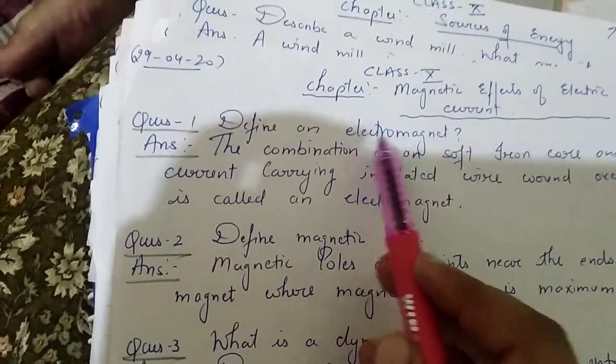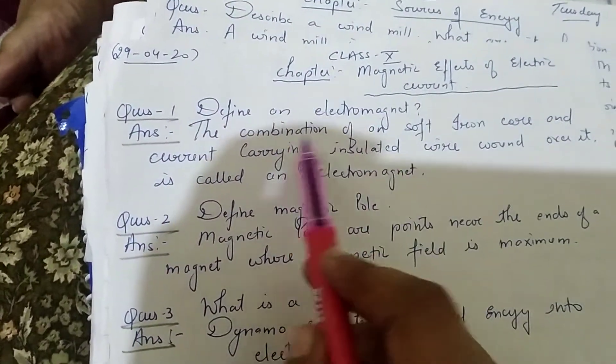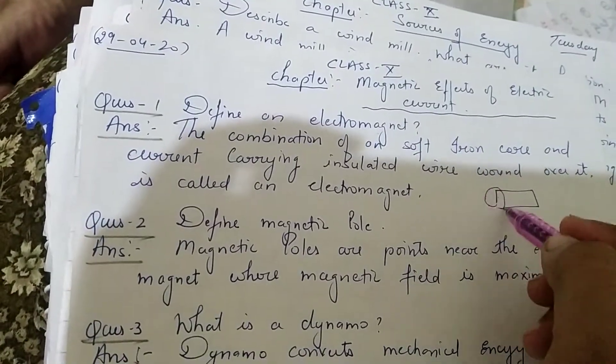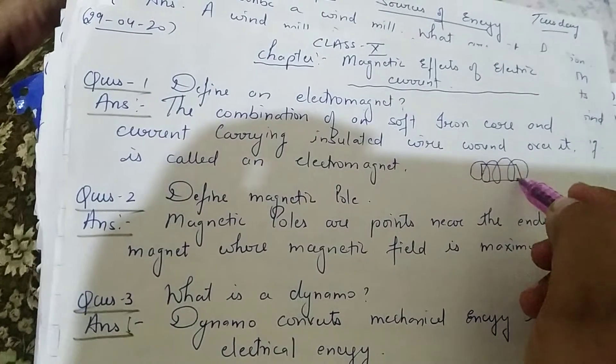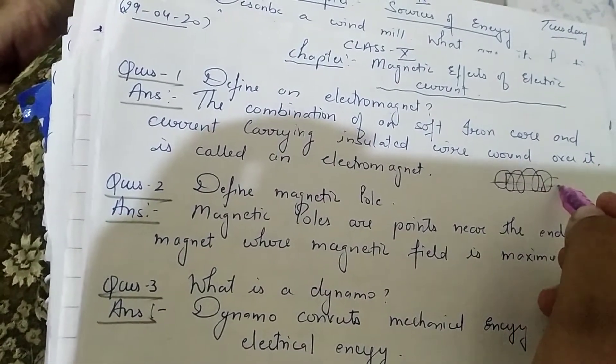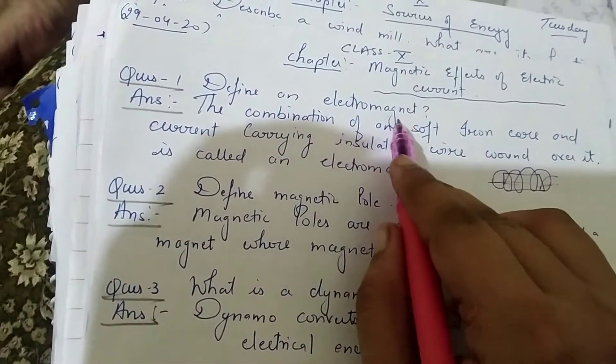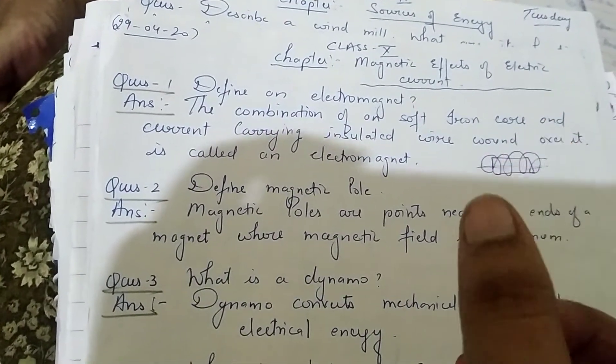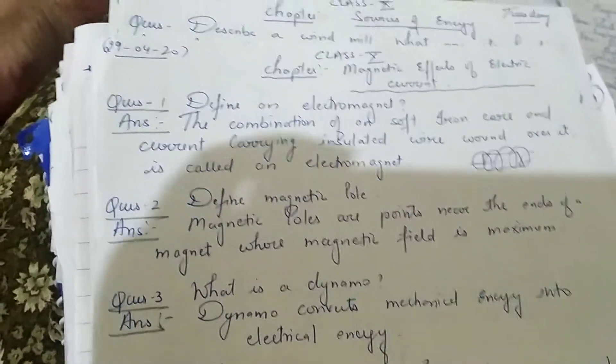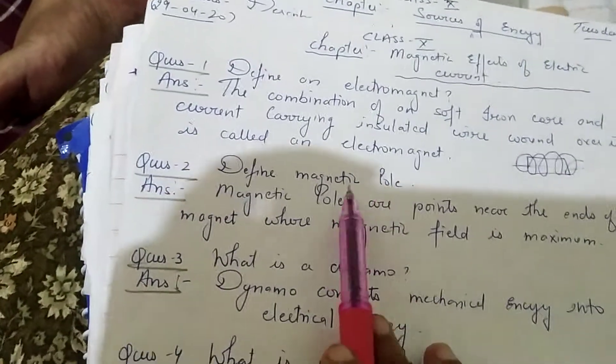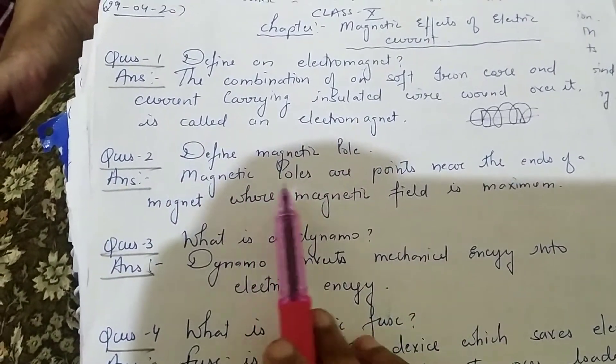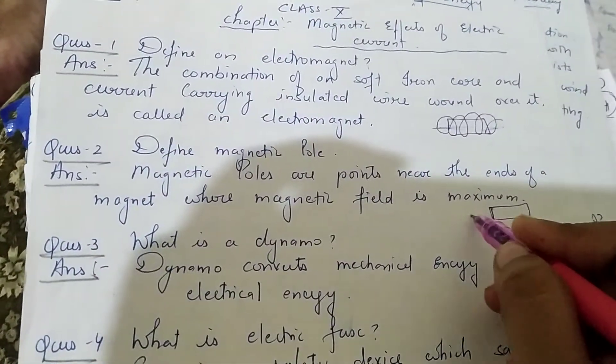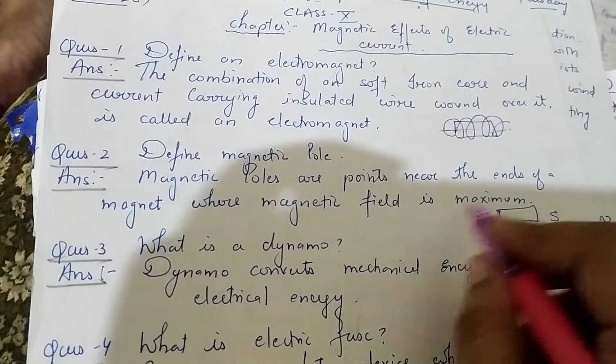What is defined as electromagnet? The combination of soft iron core and coil wrapped with wire through which current moves is called an electromagnet. Define magnetic pole: Magnetic poles are points near the ends of magnets where the magnetic force is maximum, that is north and south pole.